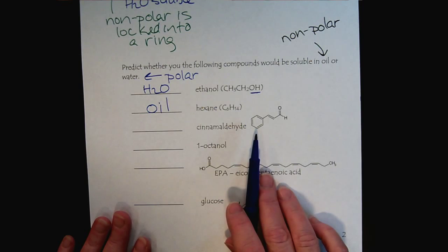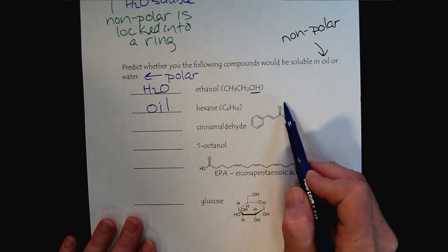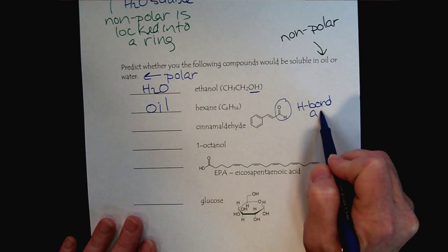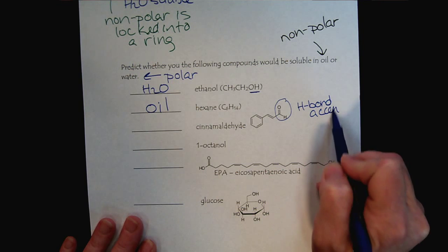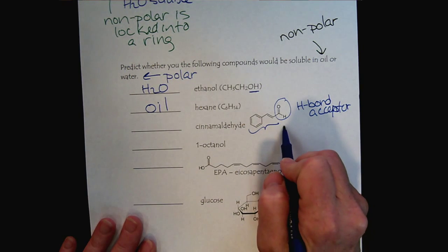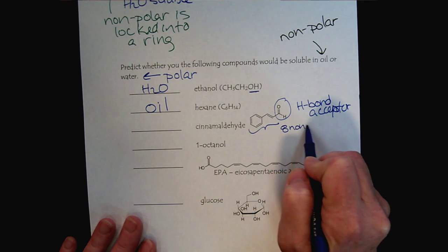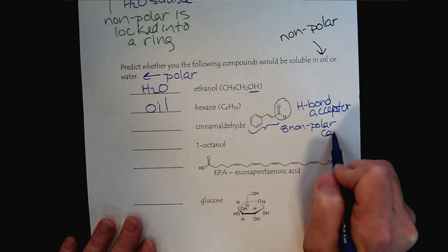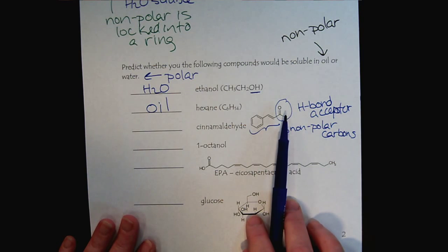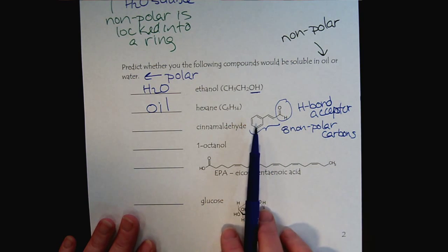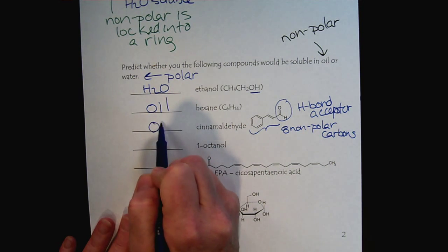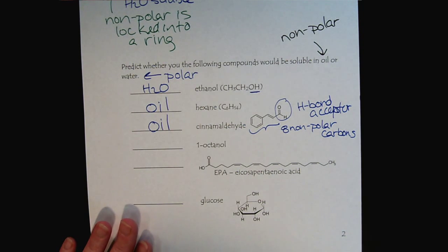Cinnamaldehyde does have an H-bond acceptor, but when we look, we see at least eight nonpolar carbons. So this molecule is a bit conflicted — part of it would love to accept H-bonds from water, but the rest is a frayed hydrophobic. The hydrophobic part dominates, so cinnamaldehyde is soluble in oils.